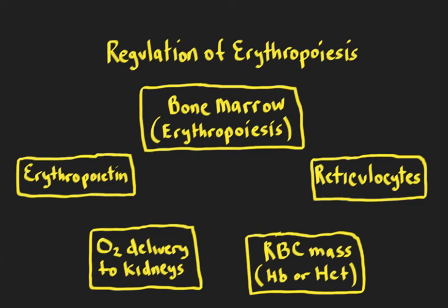After watching this video, you should be able to describe the regulation of erythropoiesis using a feedback control diagram and predict the effects of disturbances in any of the elements of the feedback system. Now let's start with the definition of erythropoiesis, which is the production of red blood cells. Erythropoiesis occurs in the bone marrow, and the principal hormone regulating erythropoiesis is called erythropoietin.